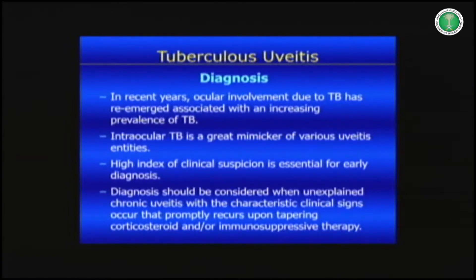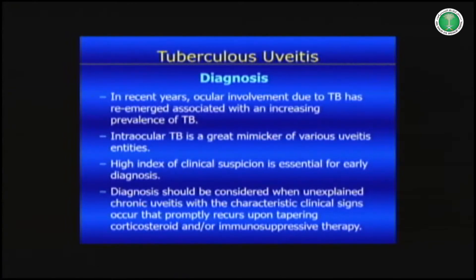We have to know that intraocular tuberculosis is a great mimicker of various uveitis entities. A high index of clinical suspicion is essential for early diagnosis, so you have to look for it. The diagnosis should be considered when unexplained chronic uveitis presents with characteristic clinical signs, which I'm going to discuss in full detail, and promptly recurs upon treatment with corticosteroid or immunosuppressive therapy.